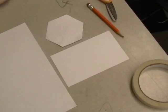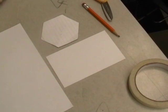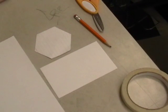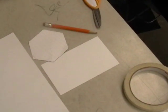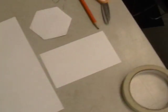To make a hexagon translation, you will need a pencil, scissors, tape, a big piece of paper, a smaller piece of paper, and a hexagon stencil.